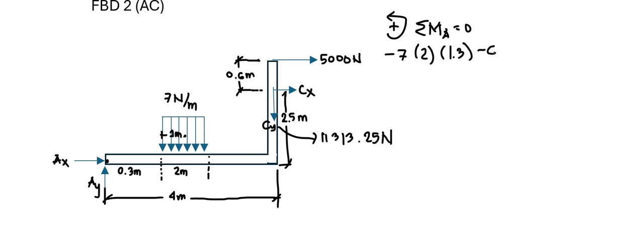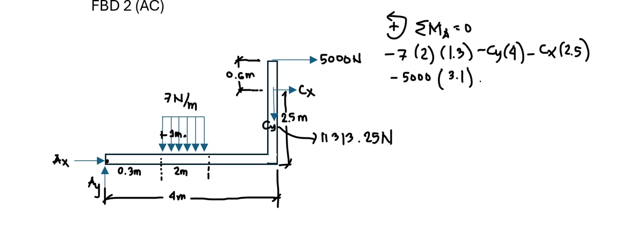Continuing the moment equation at A: minus CY, also acting clockwise, with a moment arm distance of 4 meters; minus CX, also clockwise, with a moment arm distance of 2.5 meters; minus 5,000 times a moment arm of 3.1 meters (that is 2.5 plus 0.6), all equal to 0. Substituting CY equal to 11,313.25 newtons, we can solve for CX.